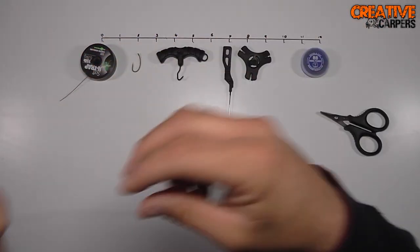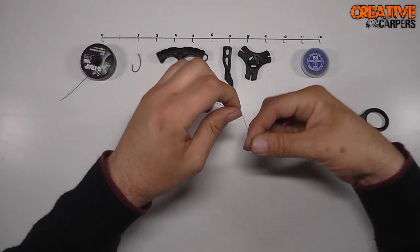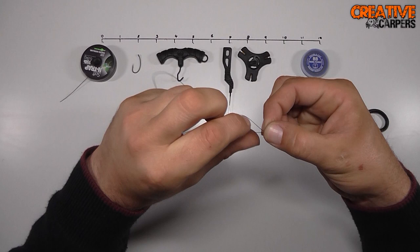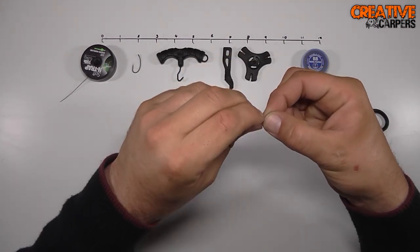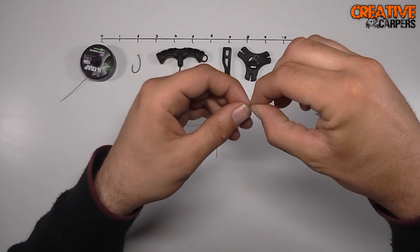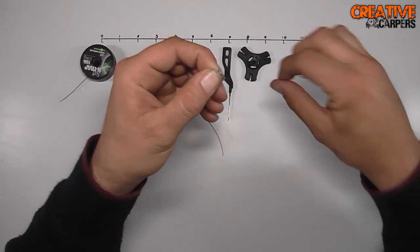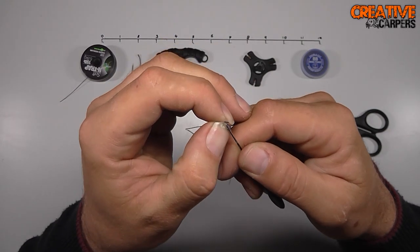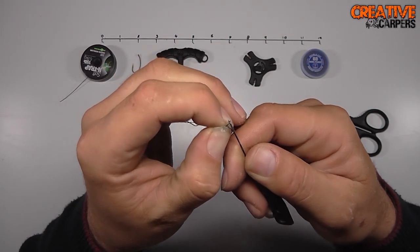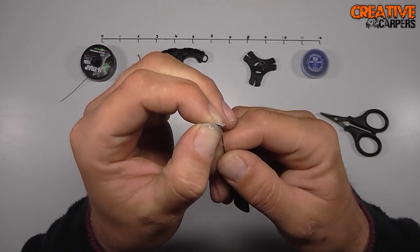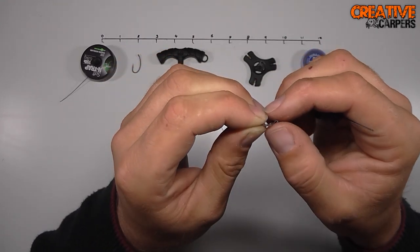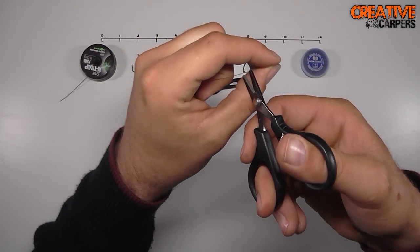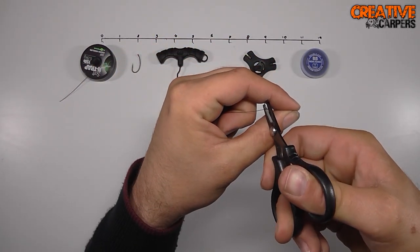So take that, then what you want to do is tie yourself a hair loop in the stripped part of the braid. I use a boiling needle just to help me with this sometimes as it's a little bit fiddly. Pull that down nice and tight, take scissors and chop off the tag end there that's left.